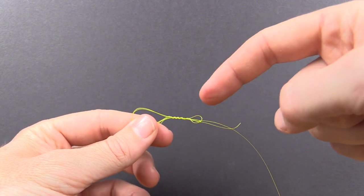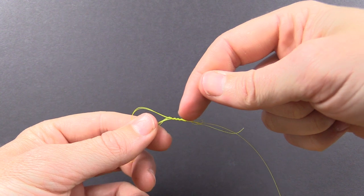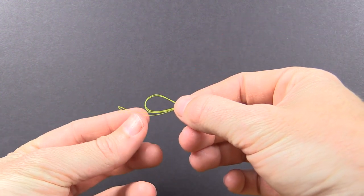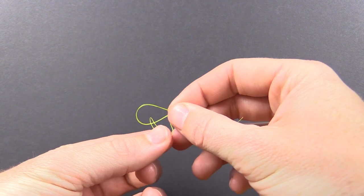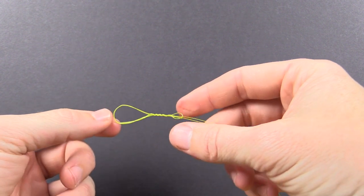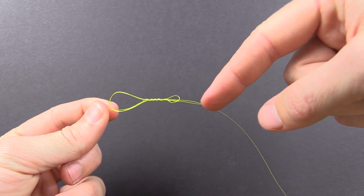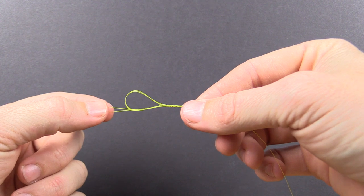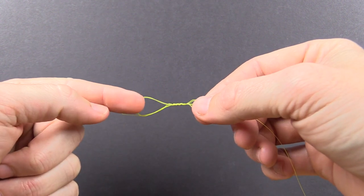So anyhow, now that we have those wraps - again, in this case we did six wraps all going from right to left - we then take the tag loop and go through this loop that we created. So now we have the tag end in the main line over here on the right. We have the original tag loop on the end that is going through the loop we created.